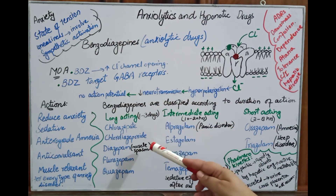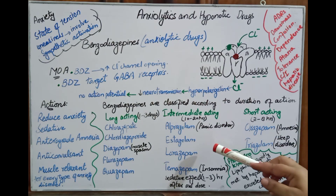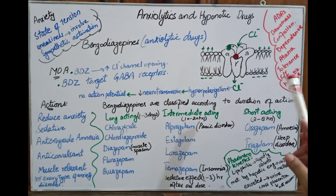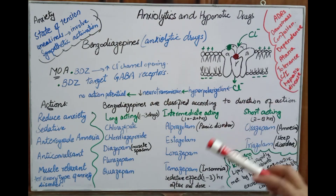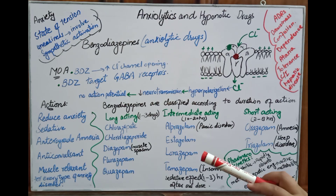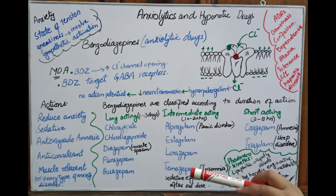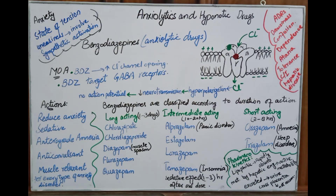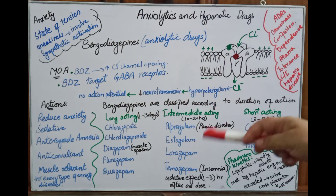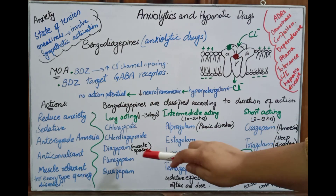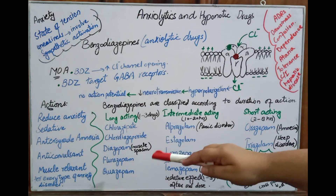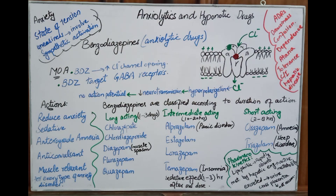Benzodiazepines are classified according to their duration of action: long-acting, intermediate-acting, and short-acting. Long-acting benzodiazepines include chlorazepate, chlordiazepoxide, diazepam, flurazepam, and quazepam — all having the suffix '-pam'. Diazepam is notable for reducing muscle spasm. Other long-acting benzodiazepines are used in severe conditions requiring prolonged treatment.